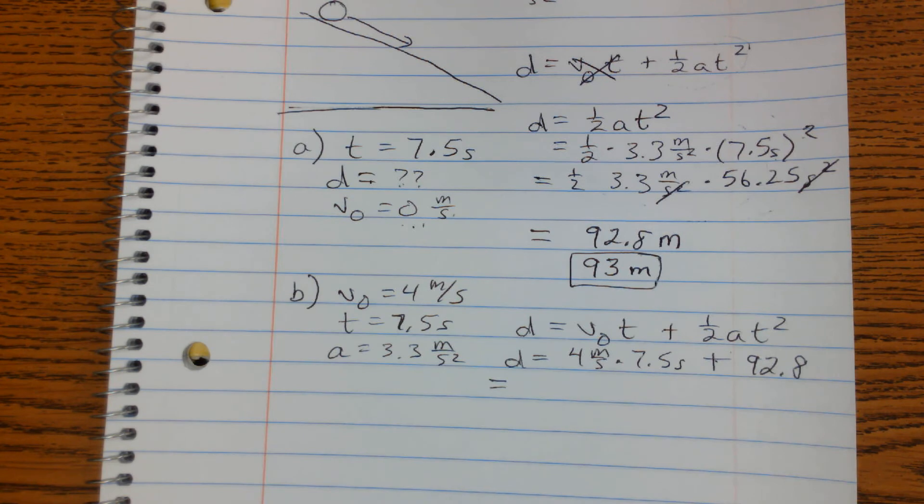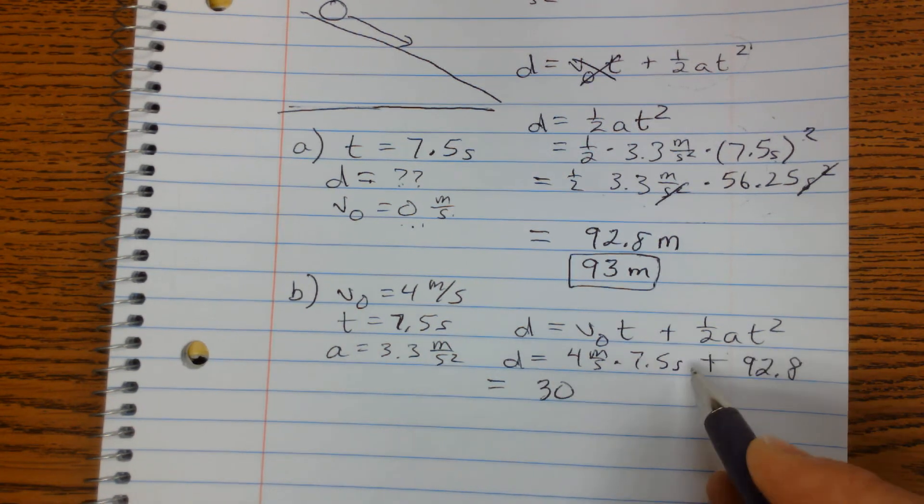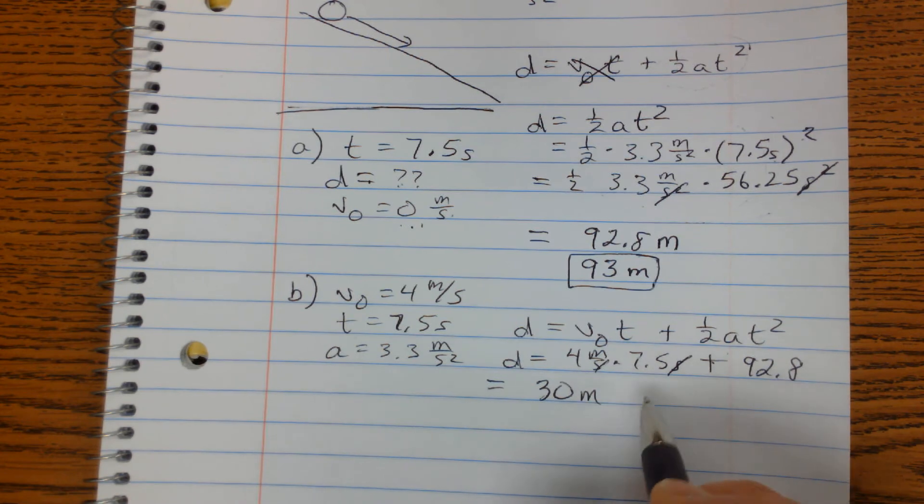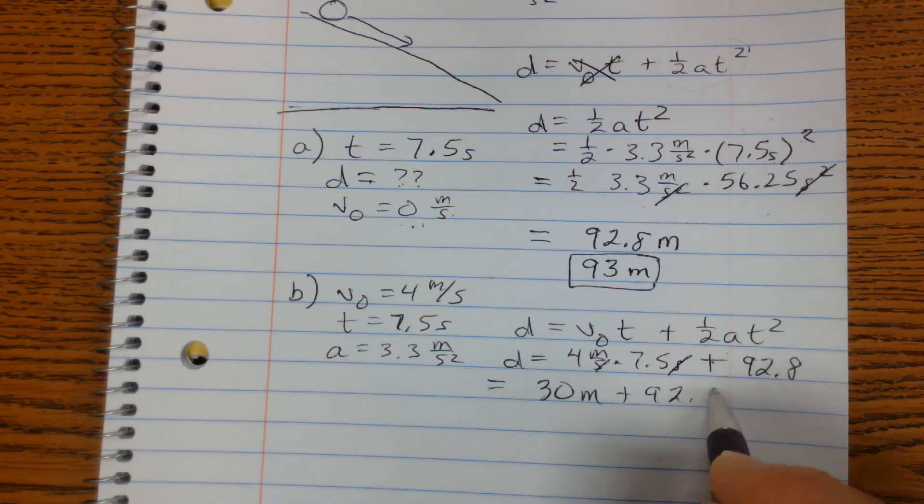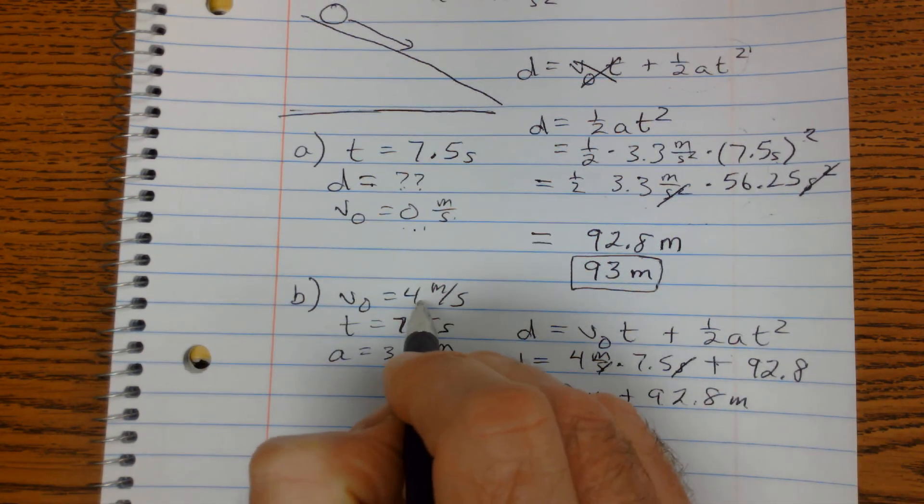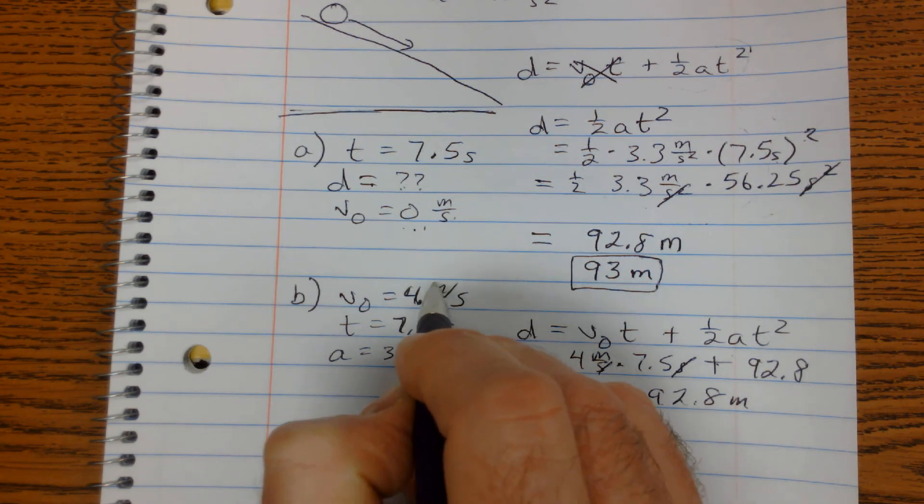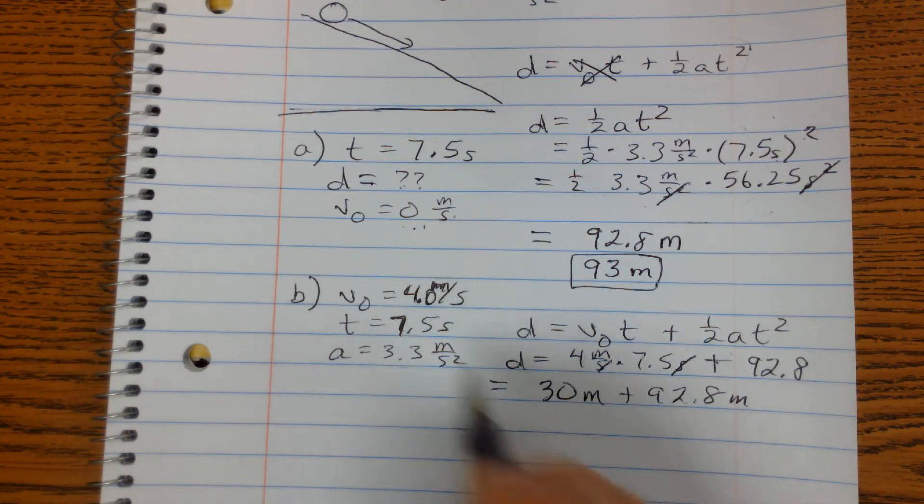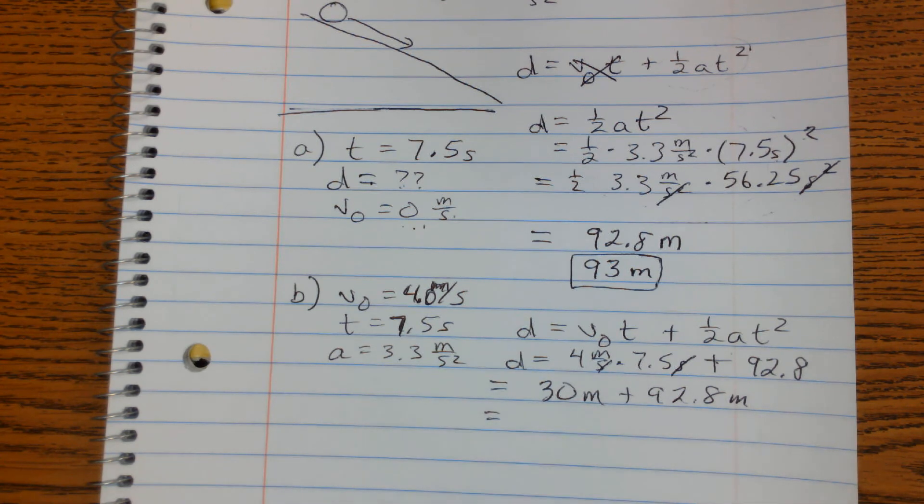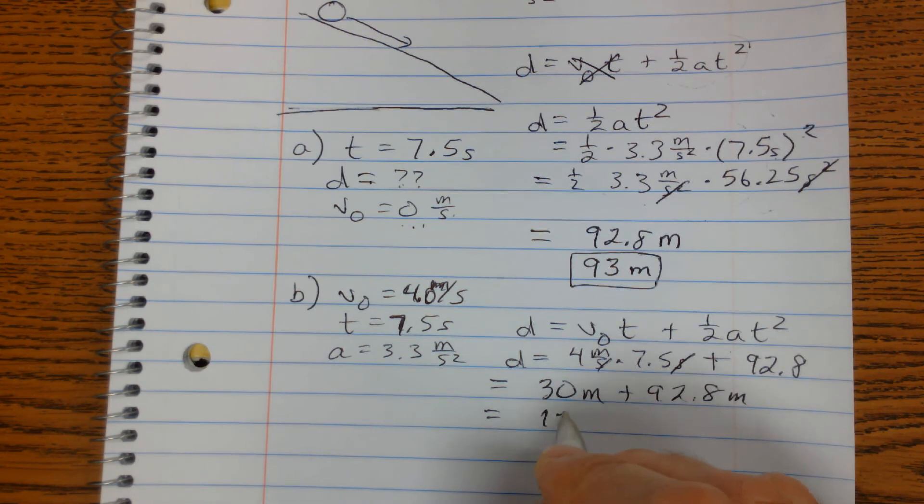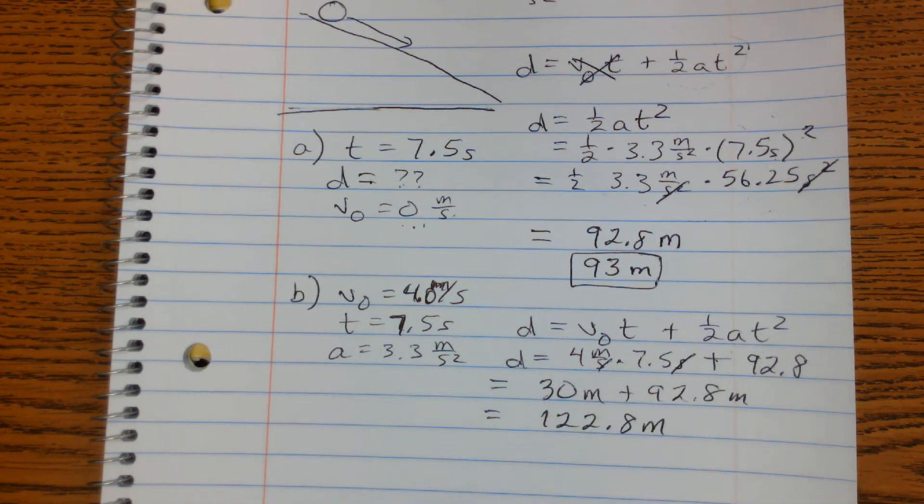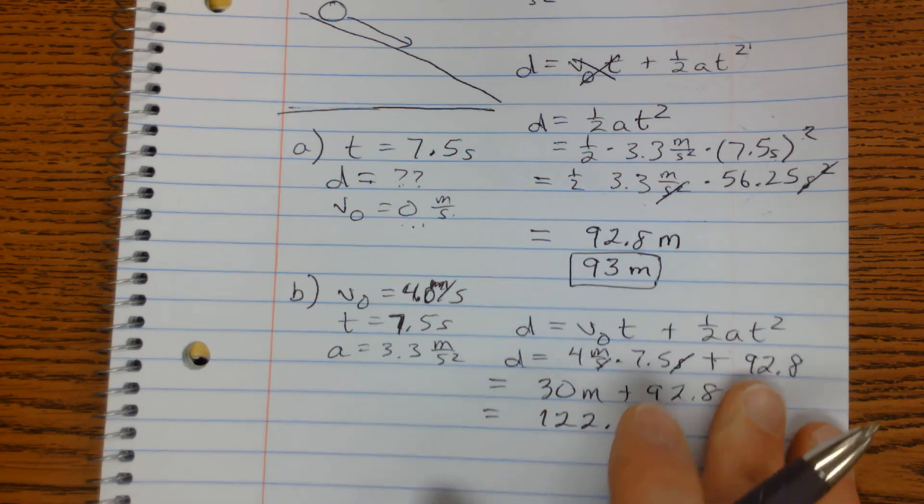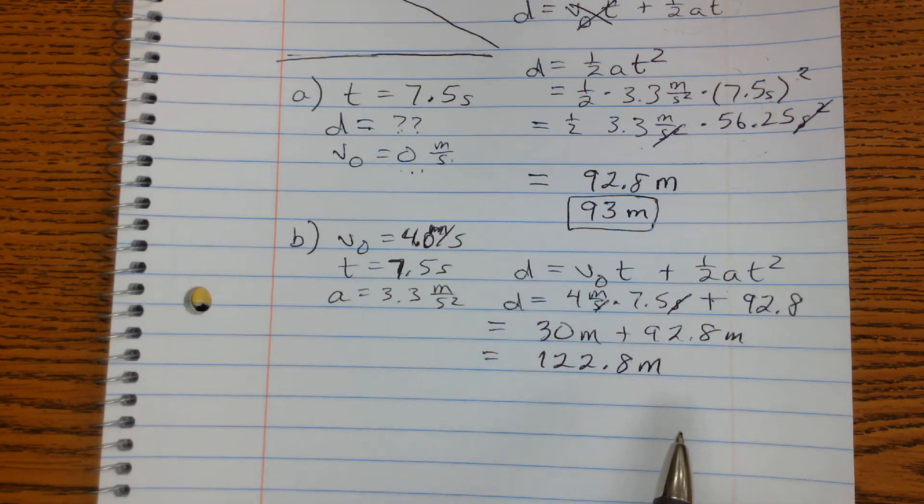4 times 7.5 gives me 30, seconds cancel because they're top and bottom. That's 30 meters plus 92.8 meters. And this was 4.0 meters per second, because we're going to keep our significant digits on this. So that's going to give me 30 plus 92.8 gives me 122.8 meters.